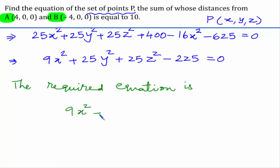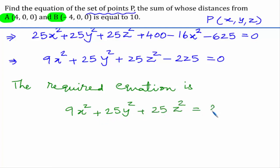Squaring both sides again, (4x plus 25) whole square equals 25 times (x squared plus 8x plus 16 plus y squared plus z squared). On further simplification, after cancelling 200x on both sides, we get 25x squared plus 25y squared plus 25z squared plus 400 minus 16x squared minus 625 equals 0. This gives 9x squared plus 25y squared plus 25z squared minus 225 equals 0.